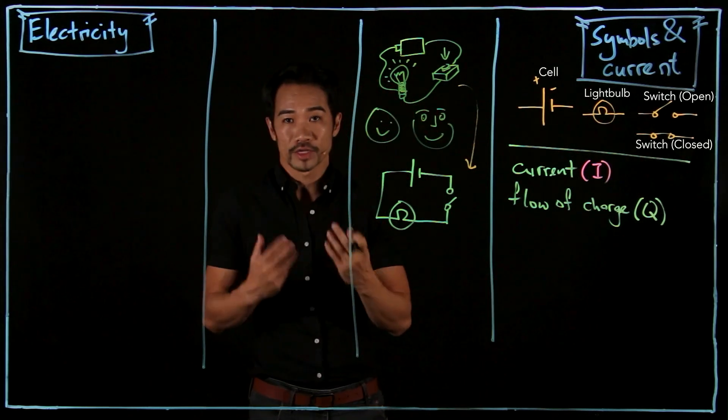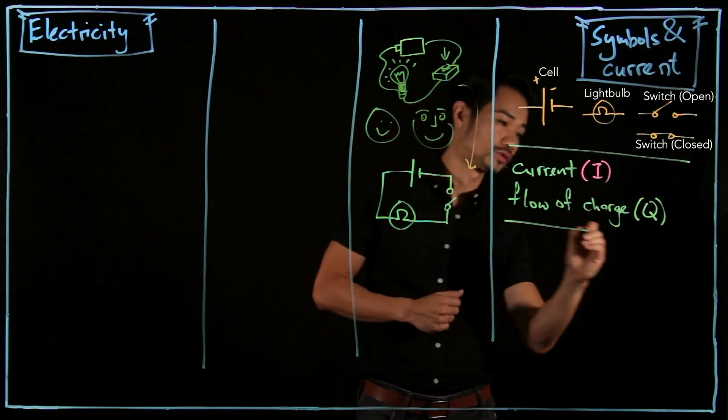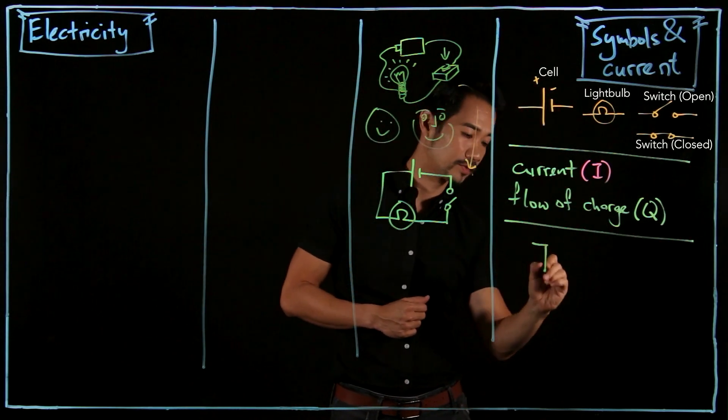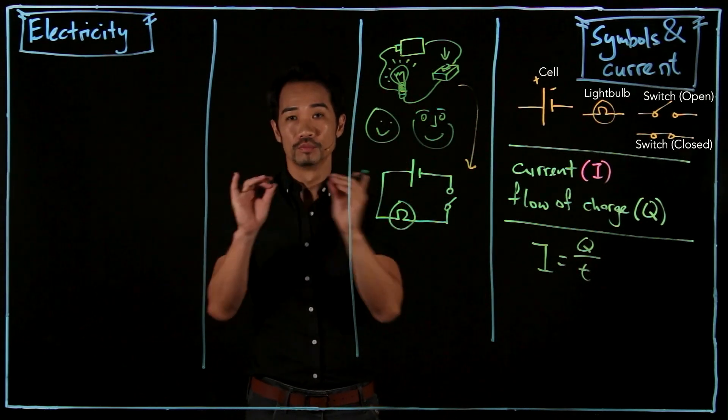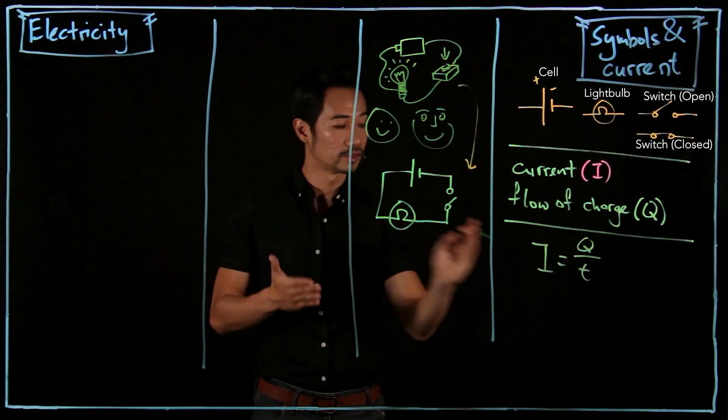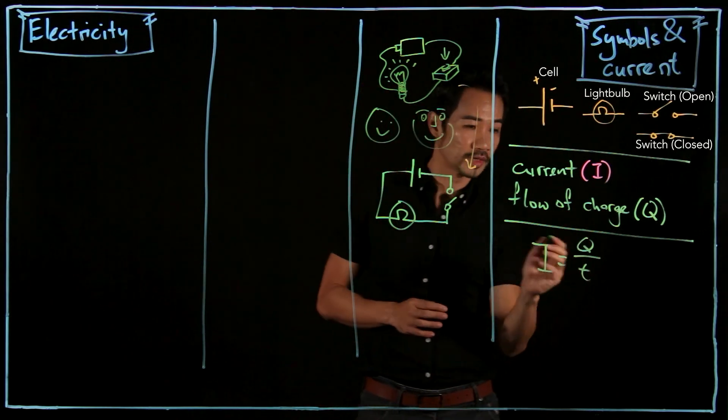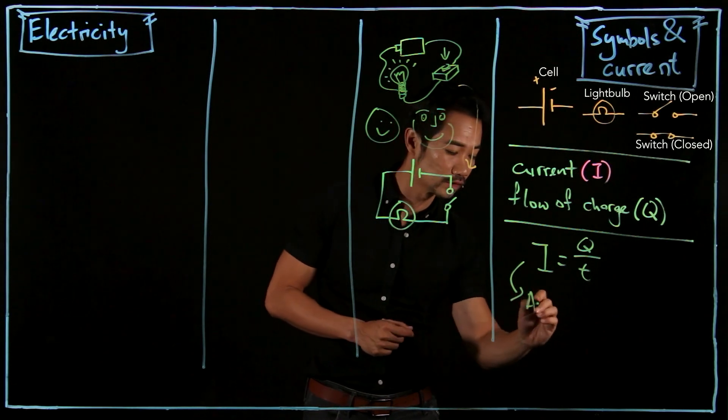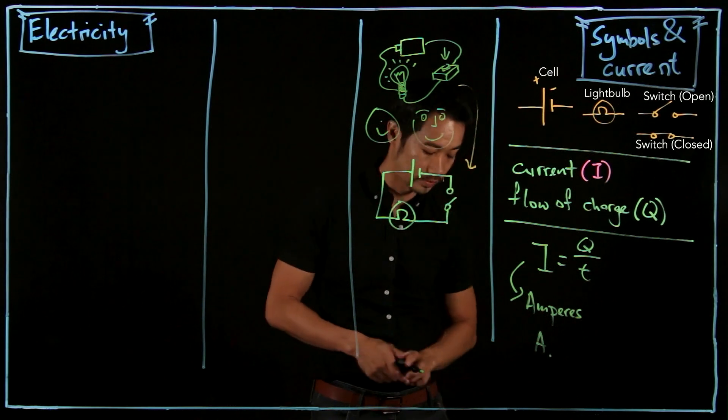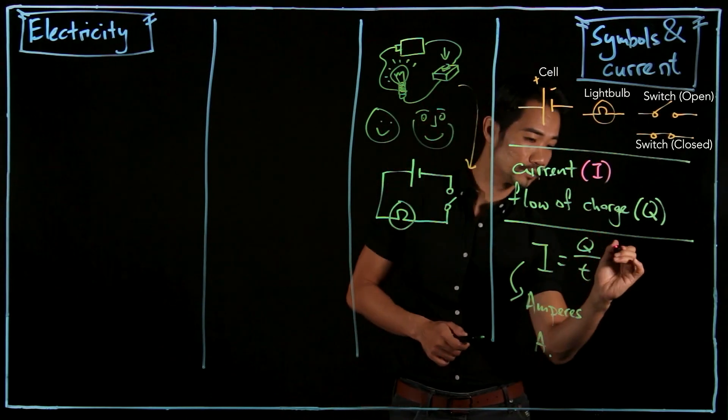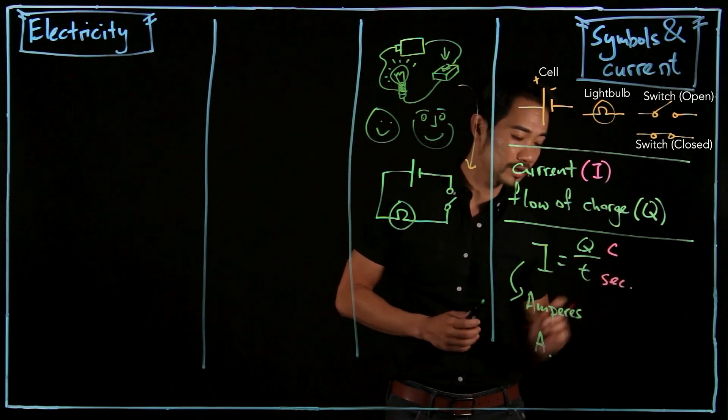So when we measure current, we actually measure current against time. So the formula for I is equal to Q over T. So how much charge moves through a particular point per unit time. So current is measured in this new unit here, amperes. Or in short, it's A. Charge is measured in Coulombs, time, S.I. unit is seconds.